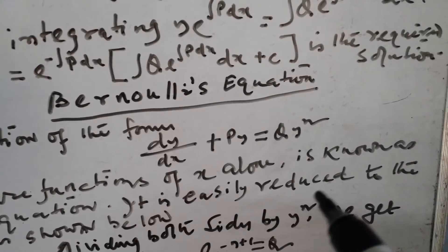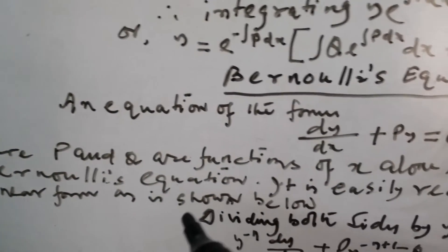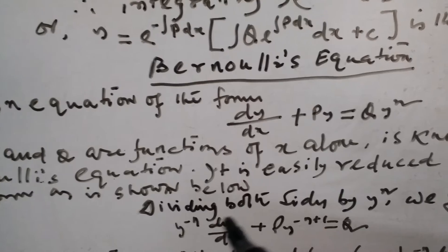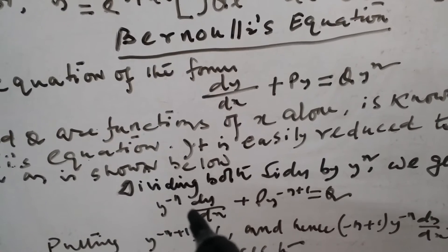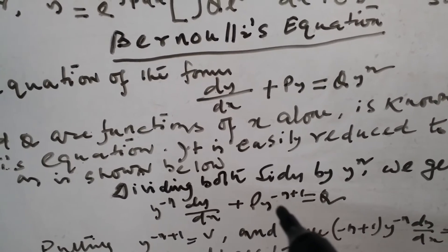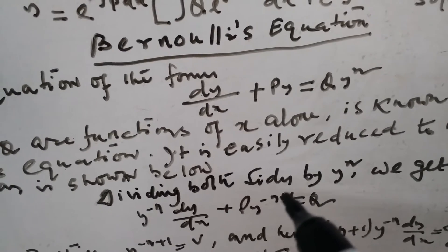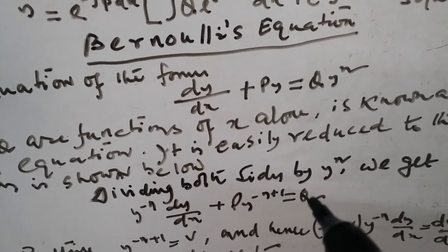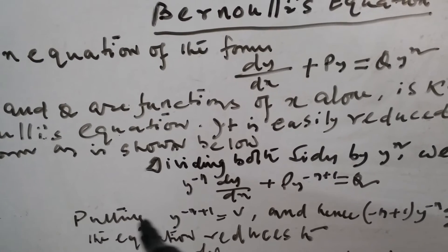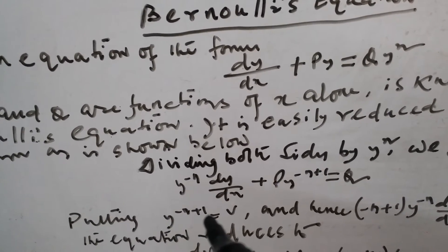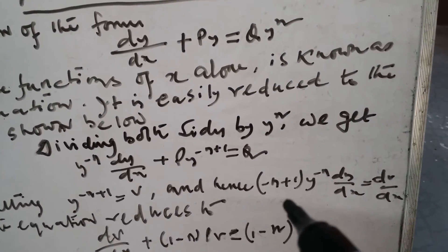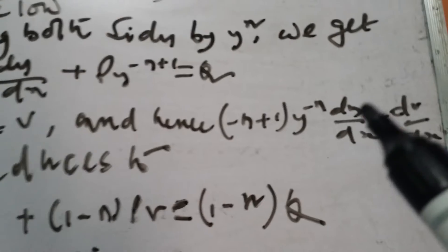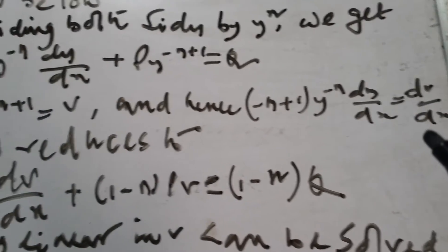It is easily reduced to the linear form as shown below by dividing both sides by y to the power n. Then we get: y^(−n) times dy/dx plus p times y^(−n+1) equals q, putting y^(−n+1) equal to v.